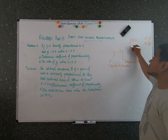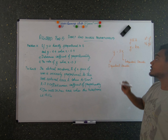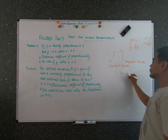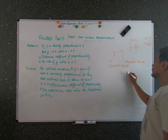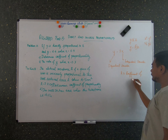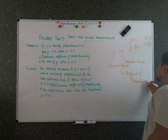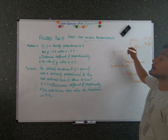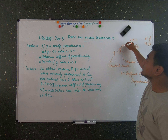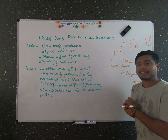Direct proportion can be written as an expression: y is equal to kx, where k is the coefficient of proportionality. So for this expression y is equal to 3x, the value of k here is 3. That is what direct proportion is about.